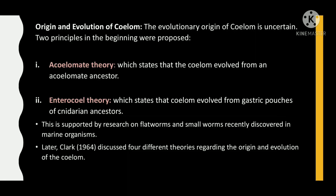The evolutionary origin of the coelom is uncertain. Two principles were initially proposed: the acoelomate theory, which states that the coelom evolved from an acoelomate ancestor, and the enterocoel theory, which states that the coelom evolved from gastric pouches of cnidarian ancestors. This is supported by research on flatworms and small worms recently discovered in marine organisms. Later, Clark in 1964 discussed four different theories regarding the origin and evolution of the coelom.